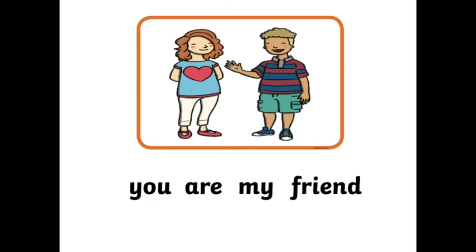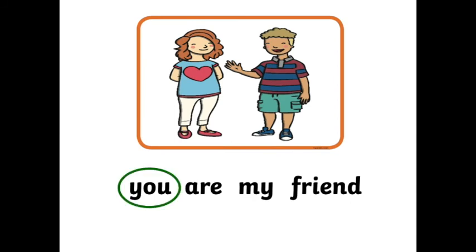This sentence has the word you in it. Read and say after me: You are my friend. Say it like this: You are my friend. You are my friend. Where is the word you? Use your finger to point. Where is you? Here is the word you. You are my friend.